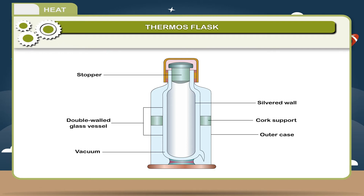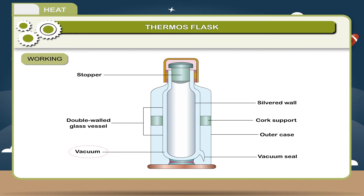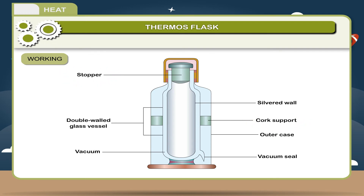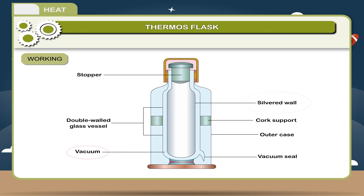The mouth of the bottle is fitted with a cork stopper. Working: The transfer of heat is minimized in these ways. One, through vacuum, both the processes of conduction and convection of heat are not possible as they require a medium. Two, the cork stopper prevents the transfer of heat by convection. Three, silvering of the vacuum tube minimizes the transfer of heat by radiation, because polished surfaces are both bad radiators and good reflectors of heat.